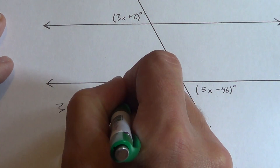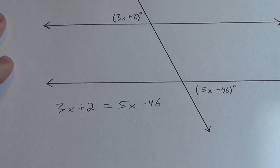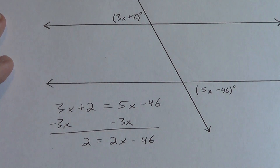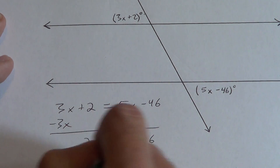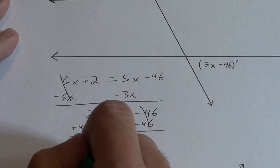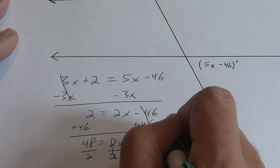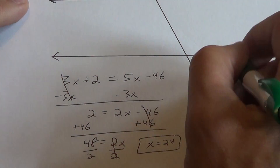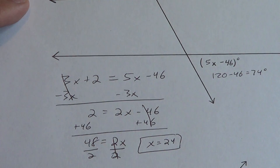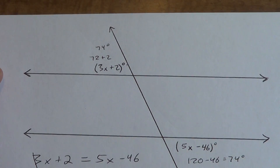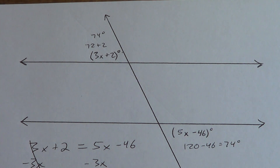So: 3x + 2 = 5x − 46. Subtract 3x: 2 = 2x − 46. Add 46: 48 = 2x. Divide by 2: x = 24. Quick check: 5 times 24 is 120, minus 46 is 74 degrees. Check the other side: 3 times 24 is 72, plus 2 is 74 degrees. Both give us 74 degrees — the answer makes sense.